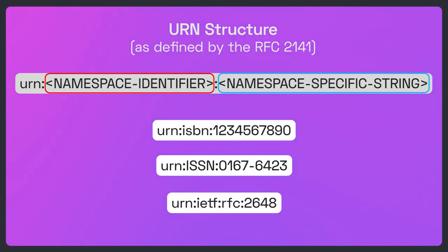For example, the first URN identifies a publication through the ISBN system. The second one identifies a publication through the ISSN system. And the last one is an RFC issued by the IETF. You may think this format differs a lot from the URL and URI formats seen earlier, but they actually share a common syntax definition — although the difference has historical reasons for existing.